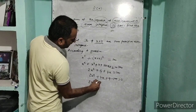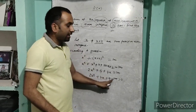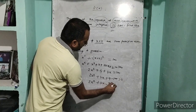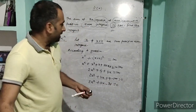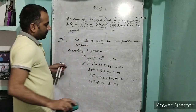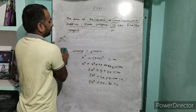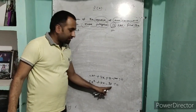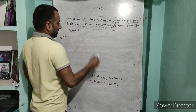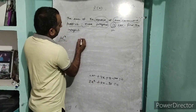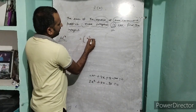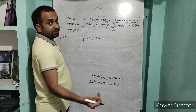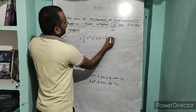So we have 2x² + 4x - 96 = 0. Now we can take 2 as a common factor. Dividing throughout by 2: x² + 2x - 48 = 0. And 0 divided by 2 is still 0.